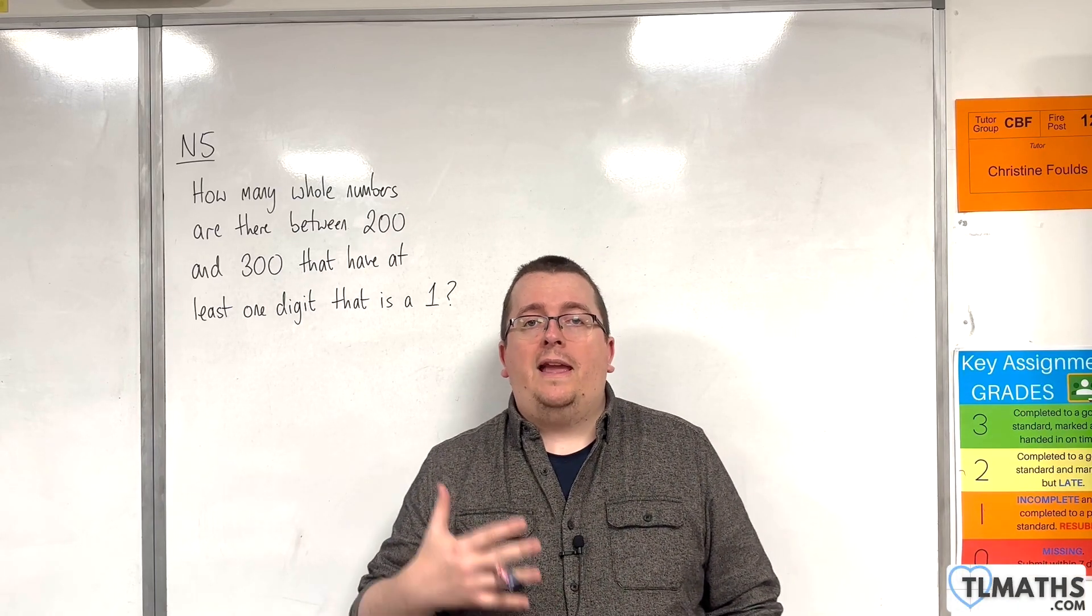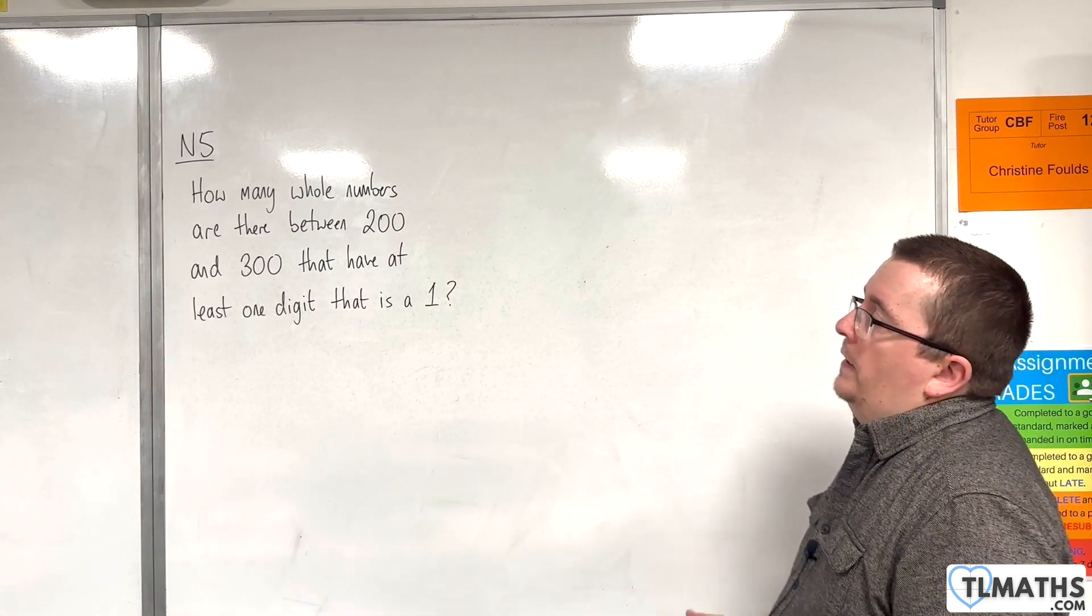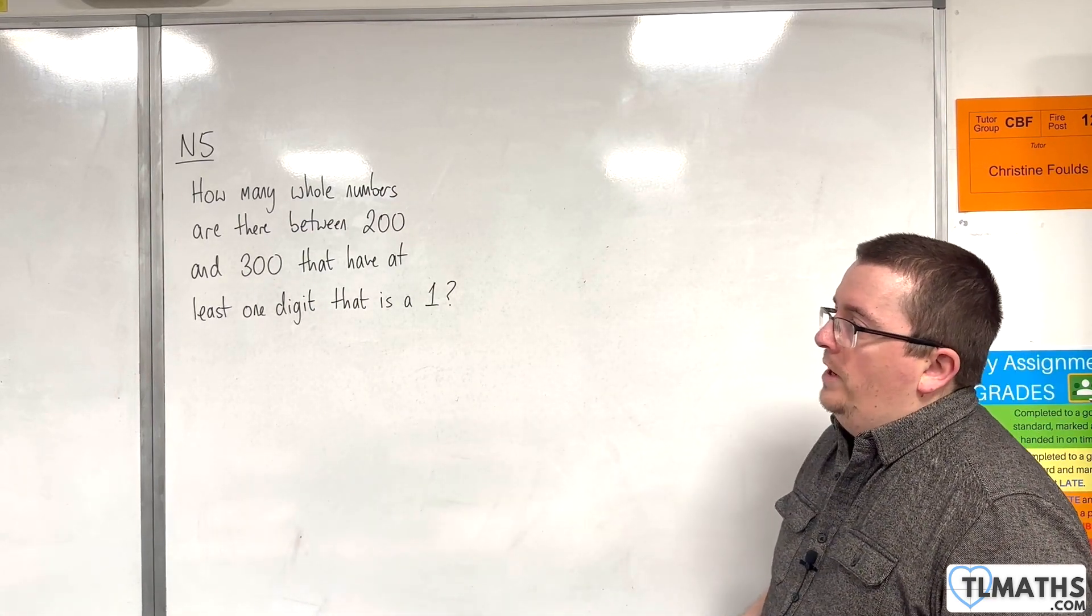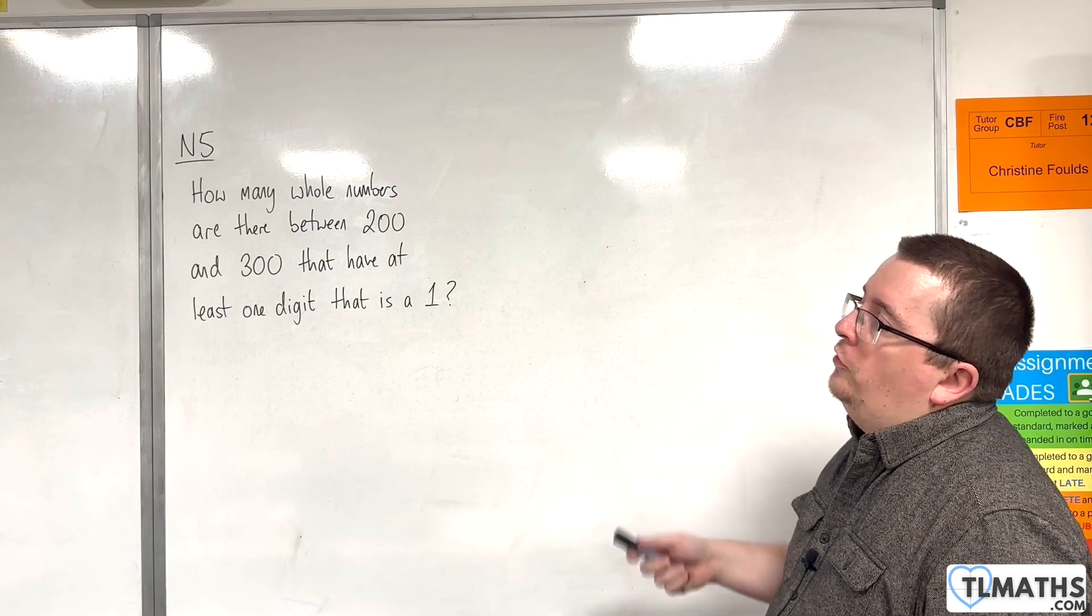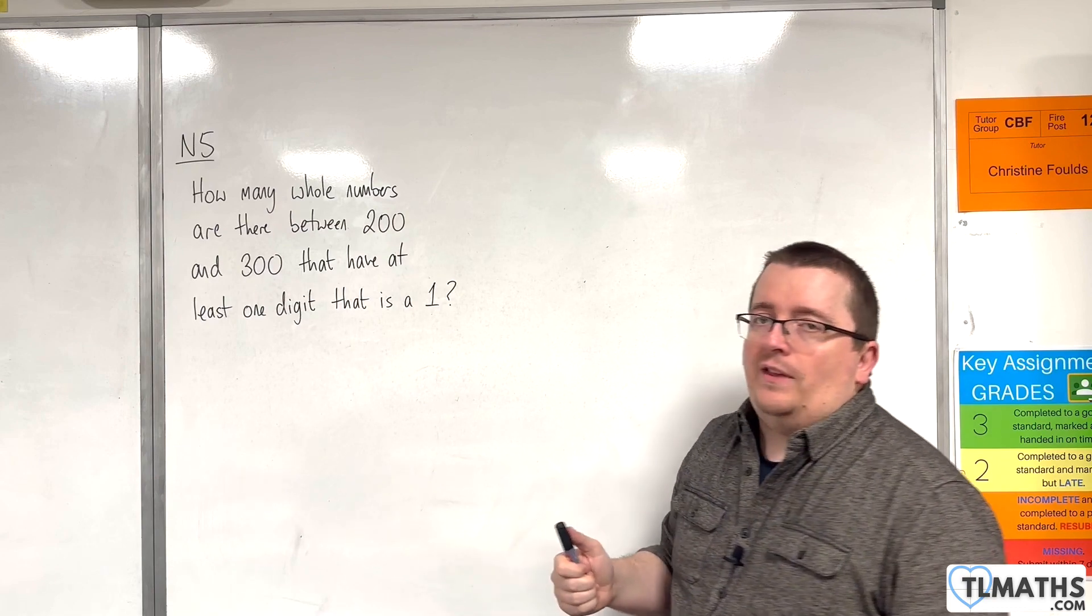In this section, we're going to be looking at listing strategies and answer this question: How many whole numbers are there between 200 and 300 that have at least one digit that is a 1?